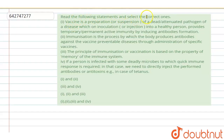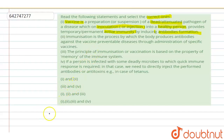The question asks us to read the following statements and select the correct ones. The first statement is: a vaccine is a preparation or suspension of a dead or attenuated pathogen of a disease, which on inoculation or injection into a healthy person provides temporary or permanent active immunity by inducing antibody formation.